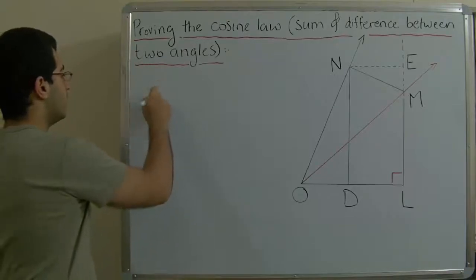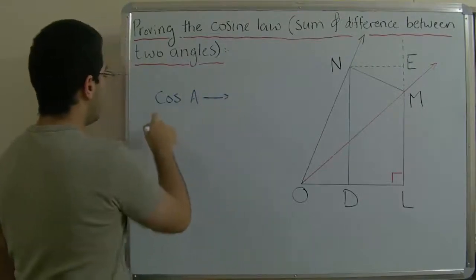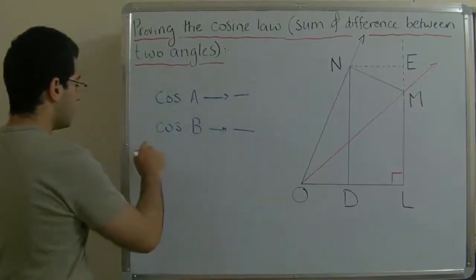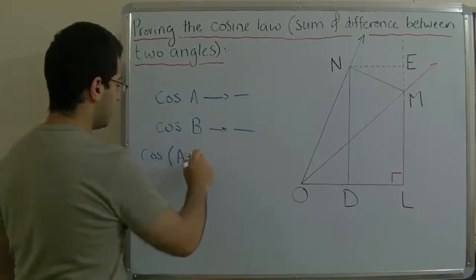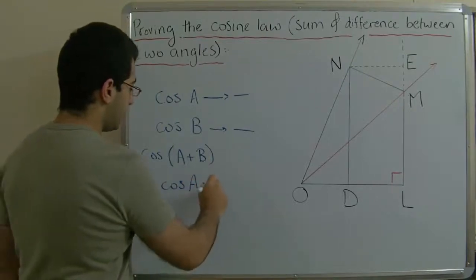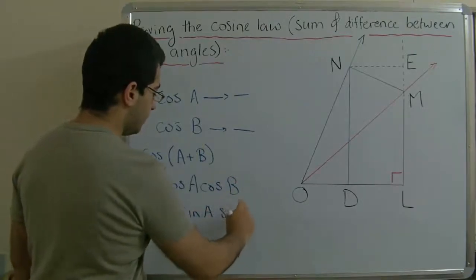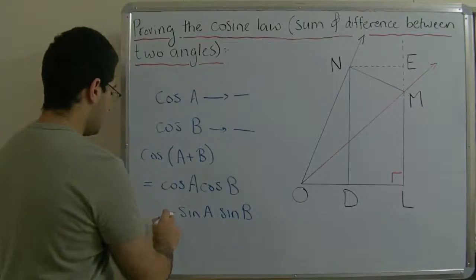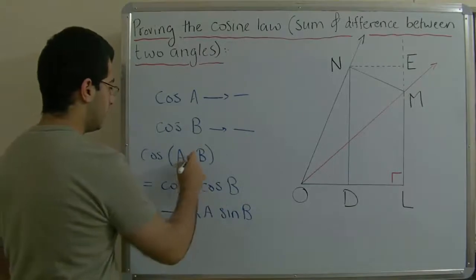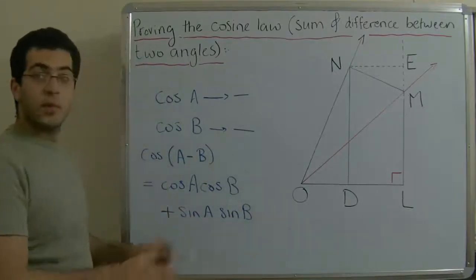So if we know the value of cosine A and cosine B, we can get cosine(A + B), which equals cosine A · cosine B − sine A · sine B. We can also get cosine(A − B), which equals cosine A · cosine B + sine A · sine B. This is the rule.